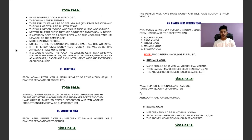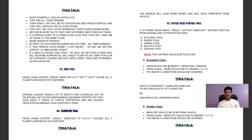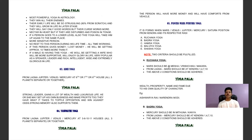Now coming to Pancha Mahapurusha Yoga. It is formed when Mars, Venus, Jupiter, Mercury, or Saturn are positioned in a Kendra in their respective rashis. Ruchaka Yoga is formed due to Mars, Bhadra Yoga due to Mercury, Hamsa Yoga due to Jupiter, Malavya Yoga due to Venus, and Shasha Yoga due to Saturn. Two criteria must be fulfilled for each.